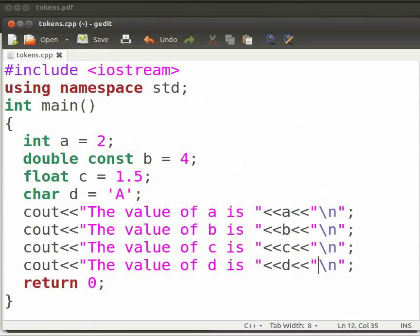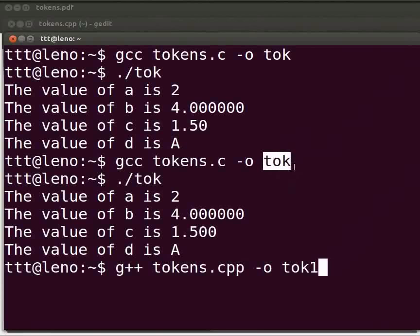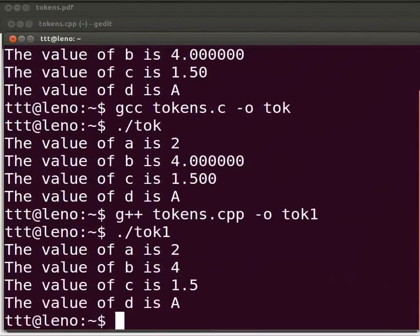Let us execute the program. Come back to our terminal. To compile, type g++ tokens.cpp -o tok1. Here, we have tok1 because we don't want to overwrite the output parameter tok for the file tokens.c. Now, press enter. To execute, type dot slash tok1. Press enter. The output is displayed.